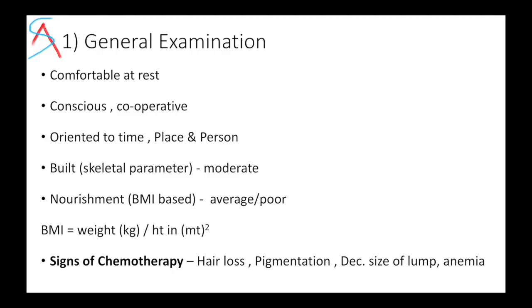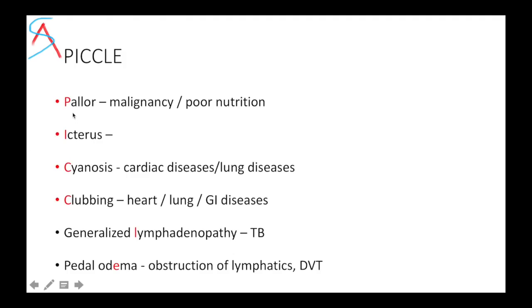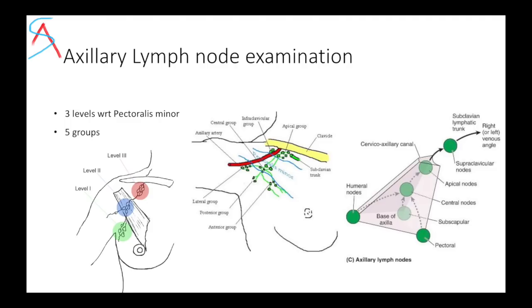Moving on to the examination part. First we have to do a general examination: present like the patient is comfortable at rest, conscious, cooperative, and oriented. Comment about her build and nourishment based on BMI. Look for any signs of chemotherapy if already diagnosed. Then look for pallor, icterus, cyanosis, clubbing, generalized lymphadenopathy, or any pedal edema. The important part is the axillary lymph node examination, which you can present after breast examination or in general examination.